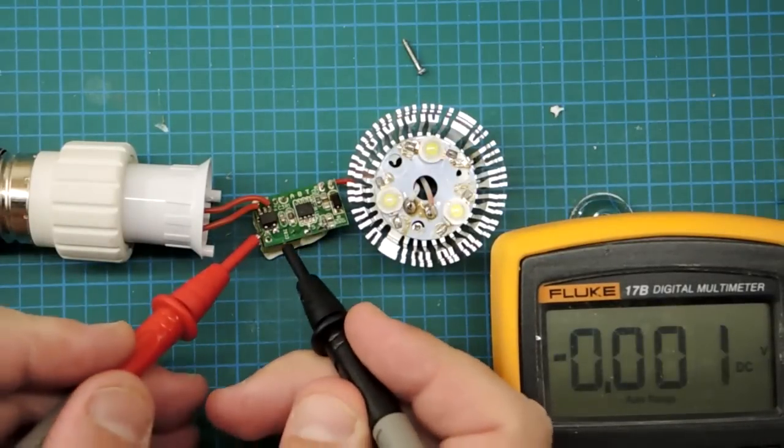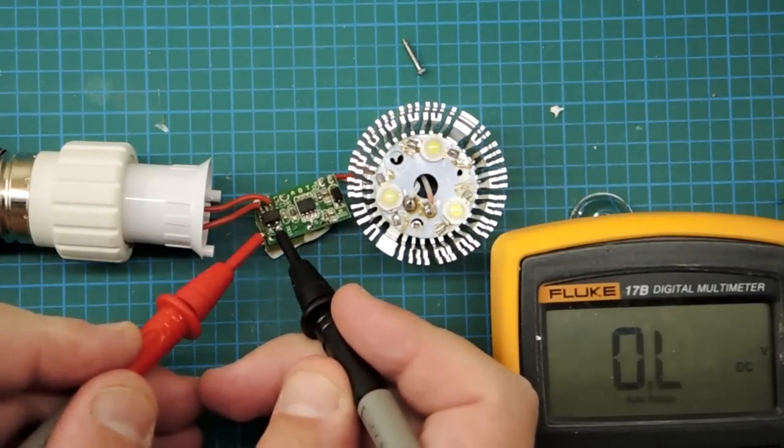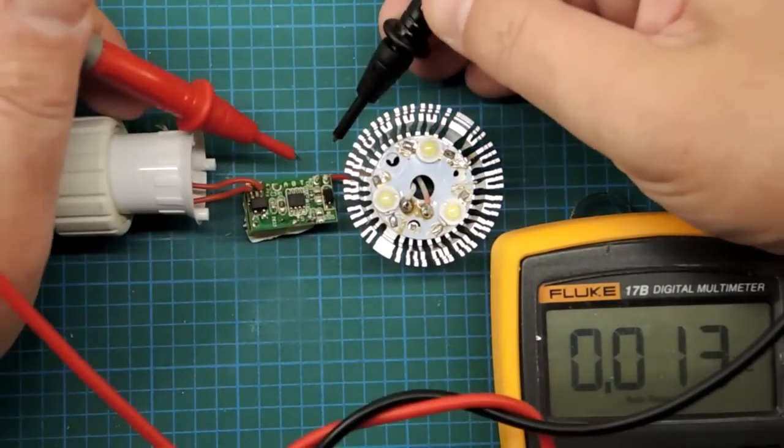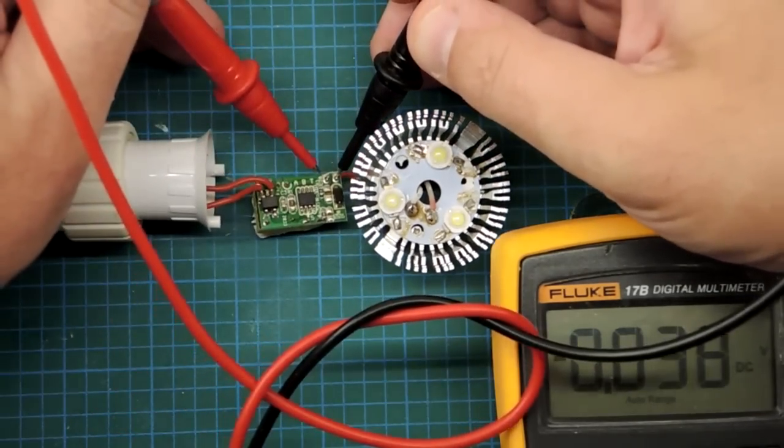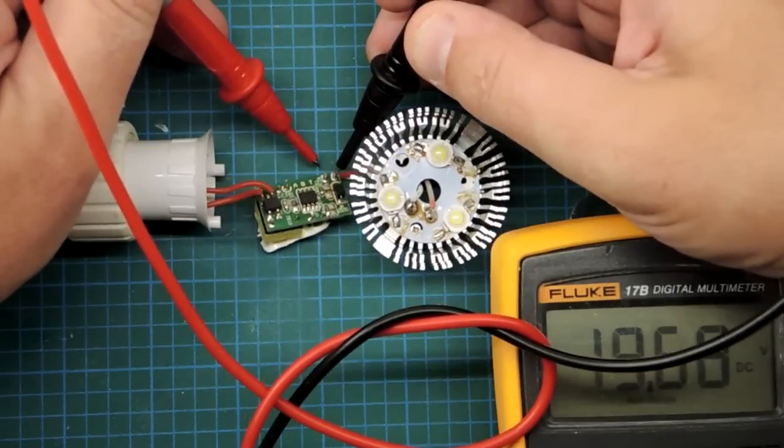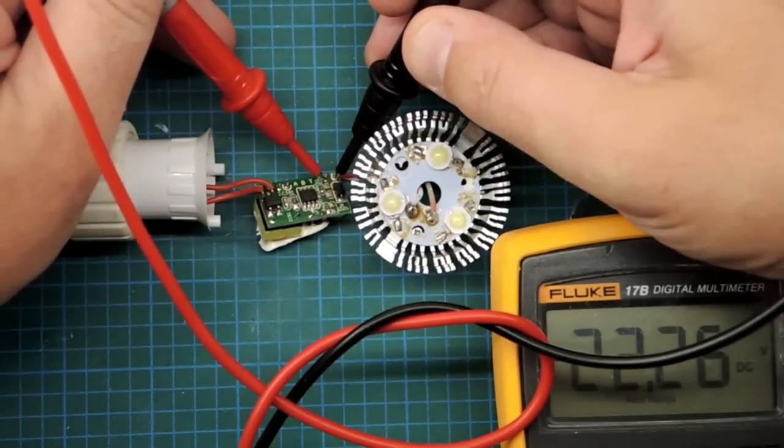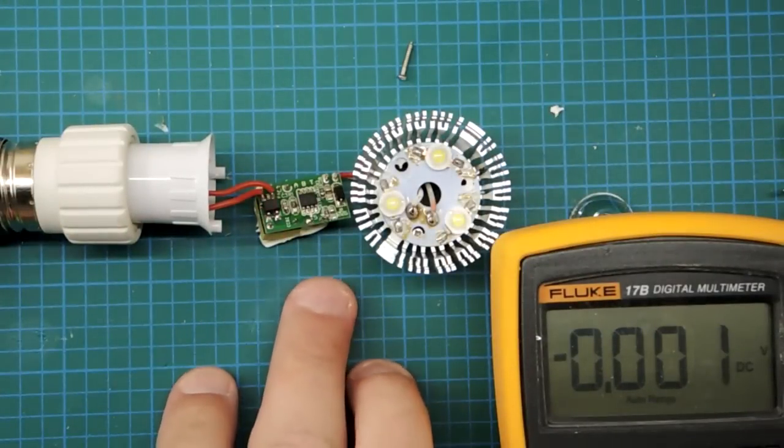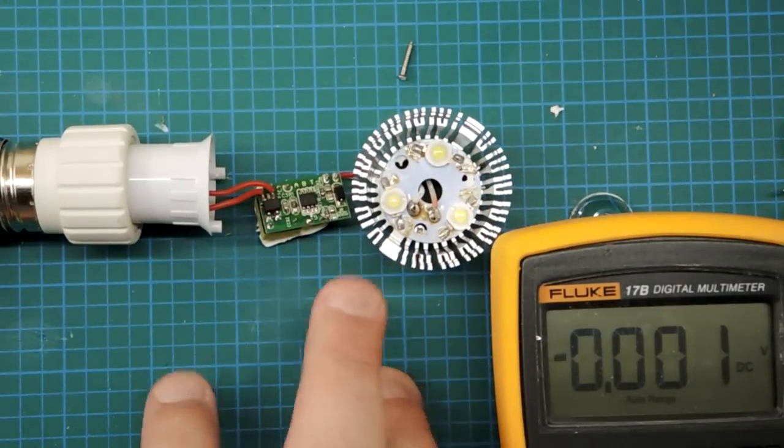So, then you go off to the bridge rectifier and question whether it's producing a DC voltage. It is. And the next question, of course, is there an output voltage on the bulb emitter array? Looks like it's producing about 22 volts DC. So, the AC to DC converter appears to be producing a DC voltage, so maybe it's the emitter.